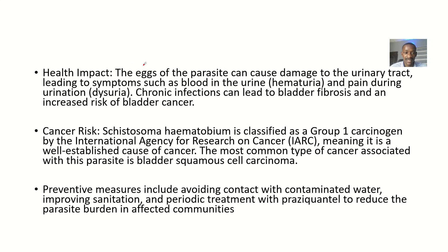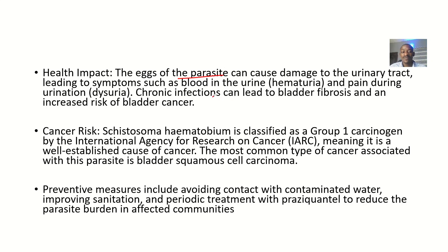The health impact: the parasite can cause damage to the urinary tract, leading to symptoms like blood in the urine. Patients with urinary schistosomiasis will typically urinate with blood, and there will be pain when urinating — that is dysuria.